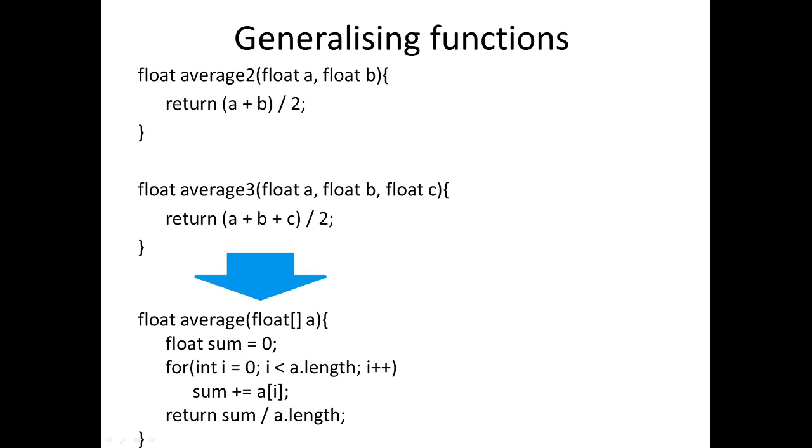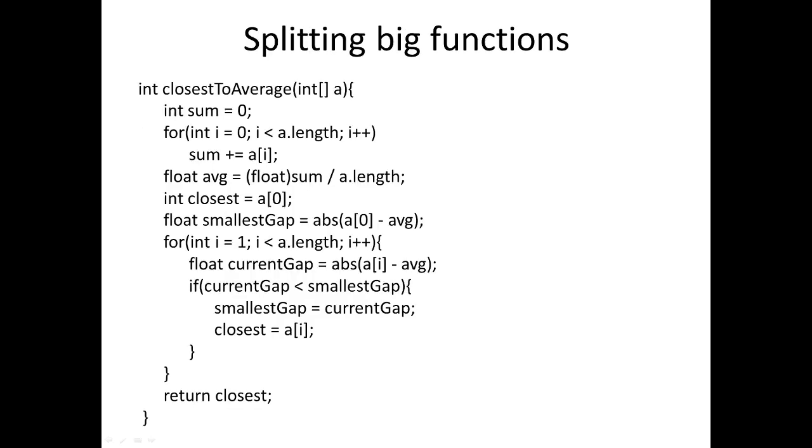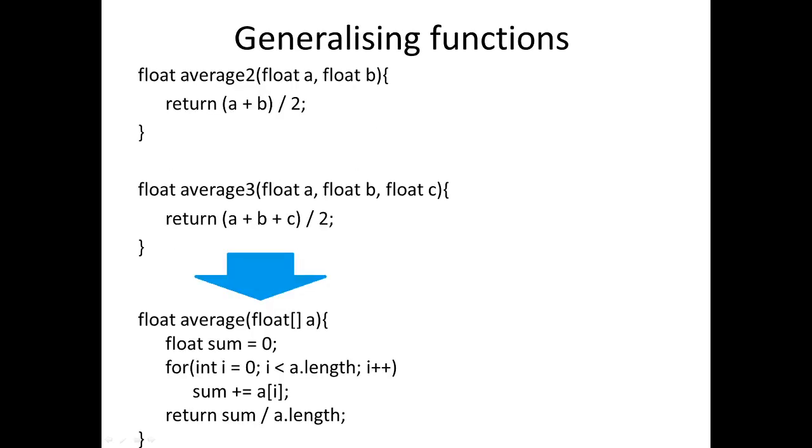So how can we generalize this? Well this just screams out for an array. And now we can say okay, well we can work out the average of all the numbers in the array. This means that the original two functions need to be slightly different in that we have to create arrays for those two values or the three values. But this new average function would probably find wider use.